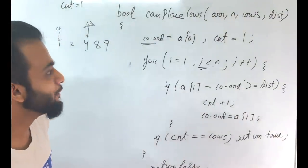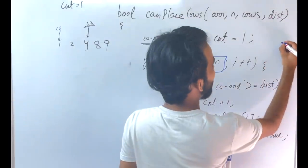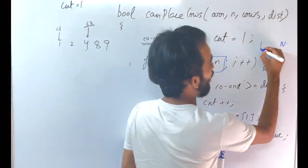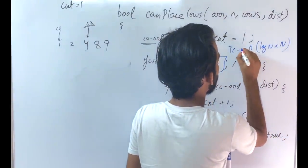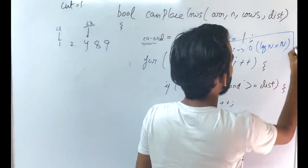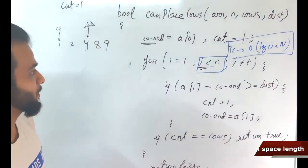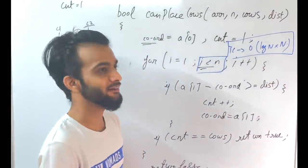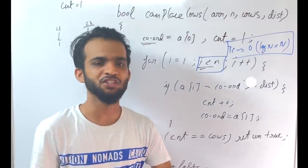The time complexity: canPlaceCows runs in O(N), and binary search runs in O(log N), so overall the algorithm is O(N log N) with no extra space. This is much better than the O(N²) brute force. I hope you've understood the entire explanation — please like the video and subscribe if you're new to the channel.